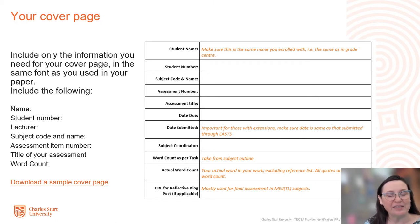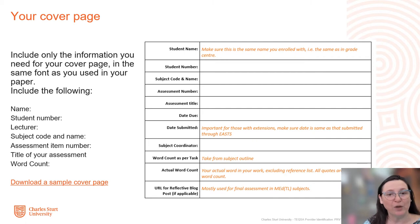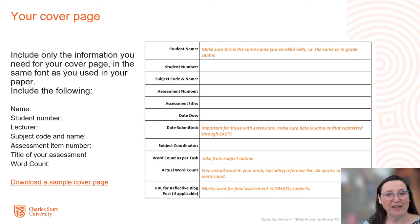If the word count has been broken up over several sections — for example, you need to write 500 words for Part A, 600 words for Part B, and 1,000 words for Part C — then you need to submit the word count separated out like that. So you need to indicate how many of the 500 words you wrote, say 480, how many of the 600 words you wrote, say 605, and how many of the 1,000 words. Don't group the words together into a total.